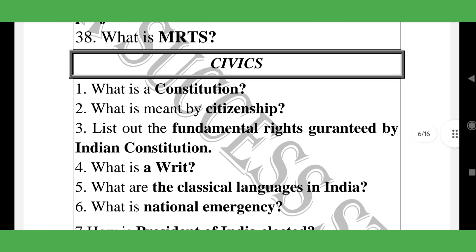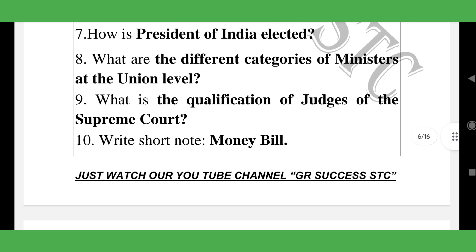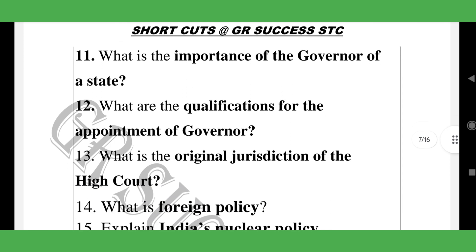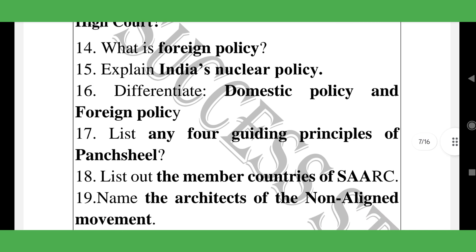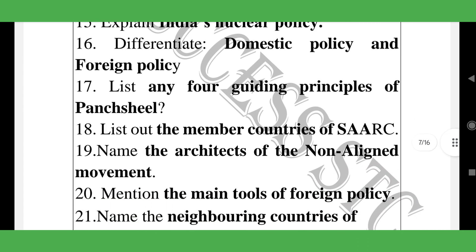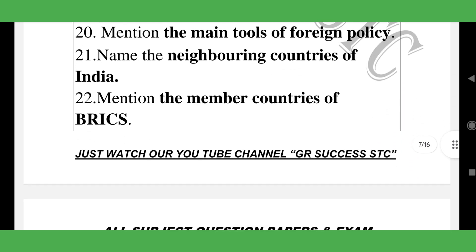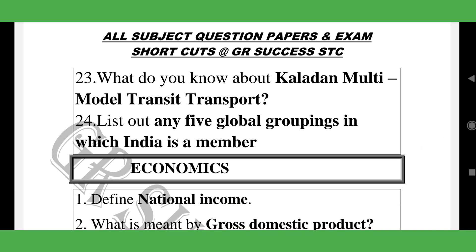Civics topics: Constitution, citizenship, writ petitions, President of India, electoral questions, qualification of judges of the Supreme Court, Money Bill, importance of Governor, qualification for appointment of Governor — repeated question — foreign policy, India's nuclear policy, domestic policy, four guiding principles — most important — Non-Alignment Movement member countries, Brexit, transit transport, five global groupings, ICA members — over 24 two-mark questions in this part.